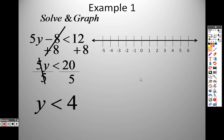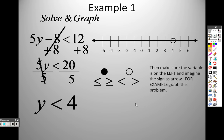So what that means when I go to graph this is I use a closed dot when it's less than or equal to or greater than or equal to. I use an open dot when it's less than or greater than. So for this problem, since it's less than, I'm going to use an open dot at 4.